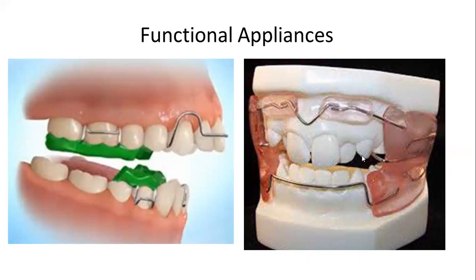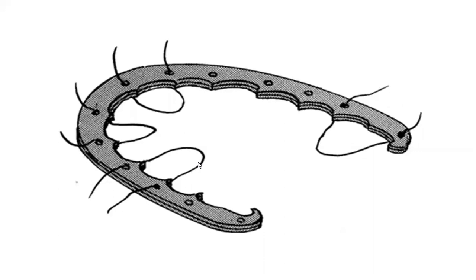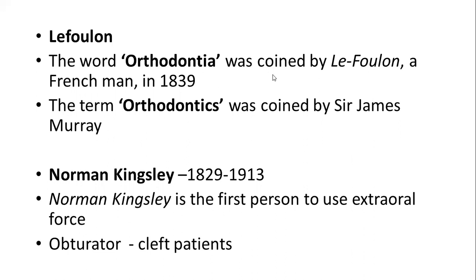Coming to the historical background: the first writings on crooked teeth were given by Hippocrates, and the first recorded method of orthodontic treatment was that of Celsus, who used finger pressure. Guilford coined the term malocclusion. Pierre Fauchard introduced the first recorded appliance, called the bandelet, which is basically an expansion appliance — teeth were tied to a rigid framework to achieve expansion. The term orthodontia was coined by Le Foulon, a Frenchman, and orthodontics was coined by Sergene Murray. Norman Kingsley was the first person to use extra-oral forces and introduced the obturator for cleft lip and palate patients.